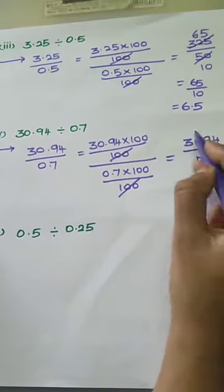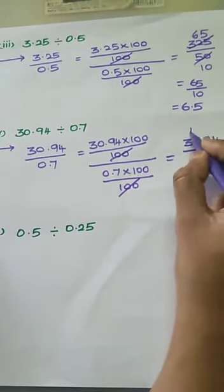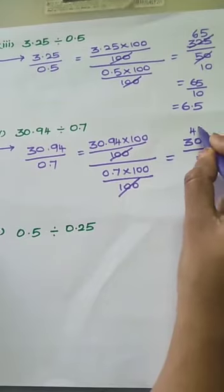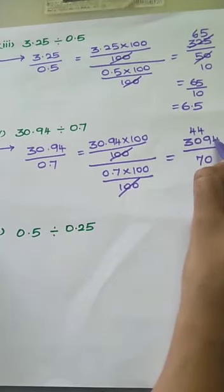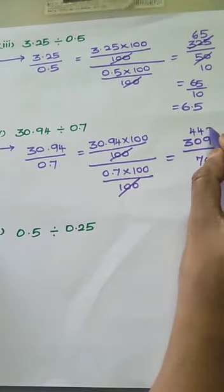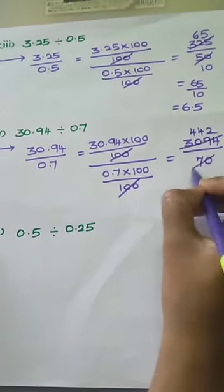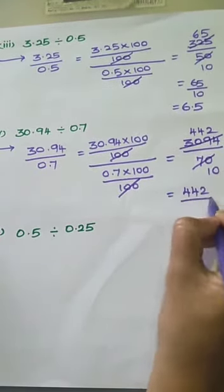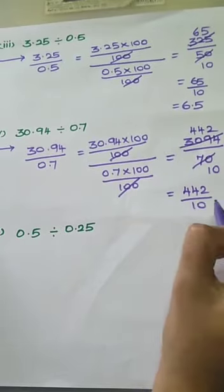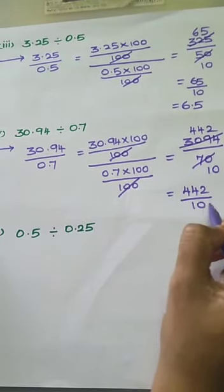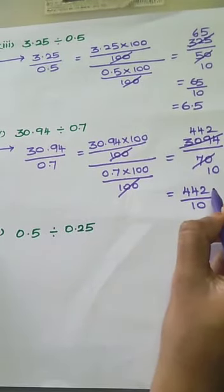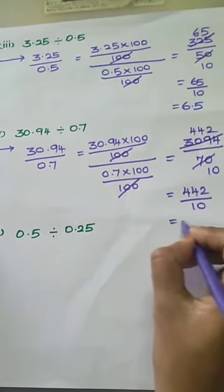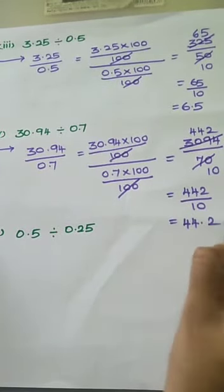Now we use the 7 times table. 7 fours are 28, balance 2; bring down 9 to get 29; 7 fours are 28, balance 1; bring down 4 to get 14; 7 twos are 14; 7 tens are 70. This gives 442 by 10. Dividing by 10 moves the decimal point to the left, so the answer is 44.2.